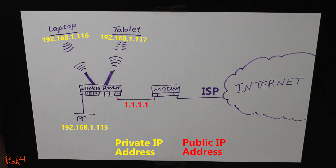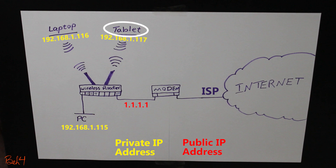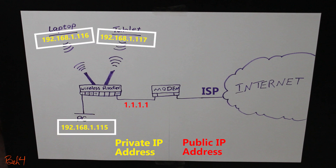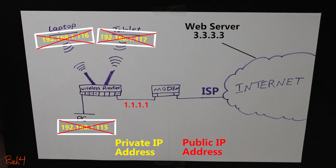So let's focus on my home network as an example. I have a PC, a laptop, and a tablet here. If they want to talk to each other, they're going to use their private IP addresses. But if they need to access a web server on the internet, then their private IP addresses are not going to be valid.